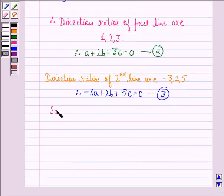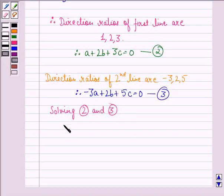Now, solving equations 2 and 3, we get A upon 10 minus 6 is equal to B upon 5 minus 9.